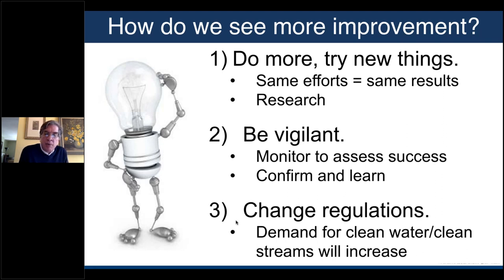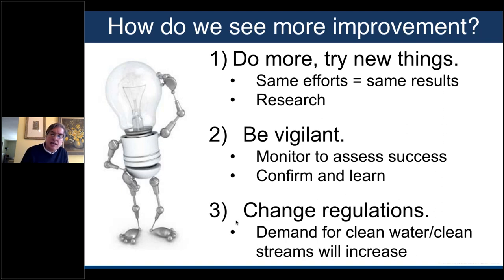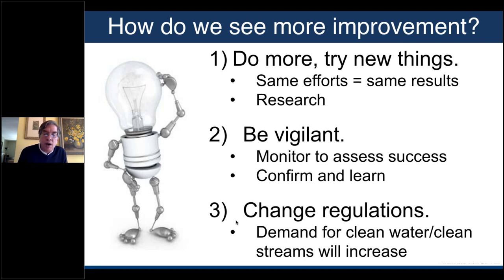We have to be vigilant — we have to monitor to assess our success. This is the only industry where millions of dollars are invested and we don't check whether the roof is still leaking. A house gets inspected; it's a significant failure if the plumbing or electricity doesn't work. We need to confirm we got what we were promised and learn from both positive and negative outcomes. Finally, regulations are going to change — we either aren't enforcing adequate regulations, or we need to revise inadequate ones. The demand for clean water and clean streams will only increase.